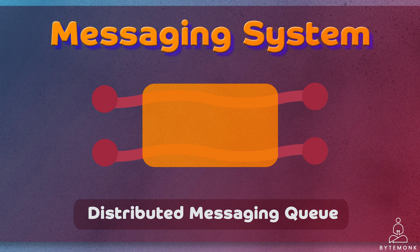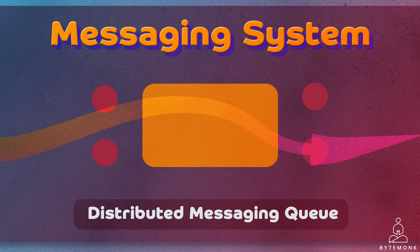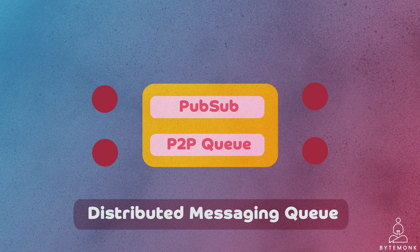A messaging system is responsible for transferring data among services, applications, or servers. Such a system helps decouple different parts of a distributed system by providing an asynchronous way of transferring messages between the sender and the receiver. All senders or producers, and receivers or consumers, focus on the data or message without worrying about the mechanism used to share the data. Publish-subscribe or point-to-point queuing are communication patterns that can be implemented within a distributed messaging system using a distributed messaging queue.